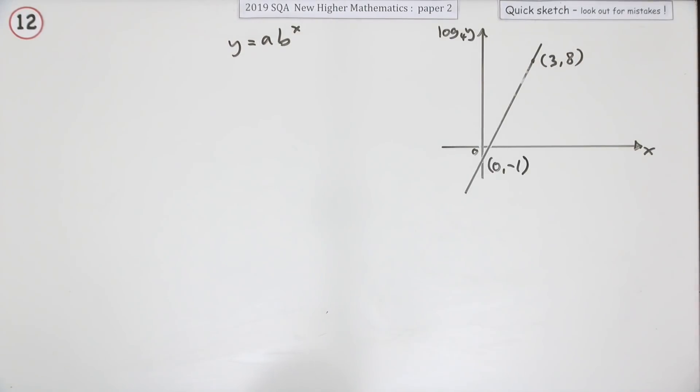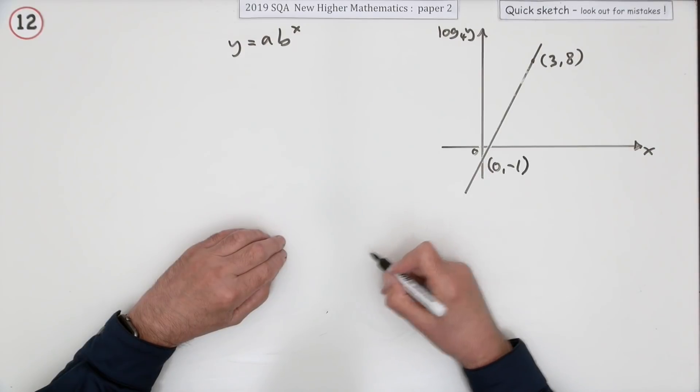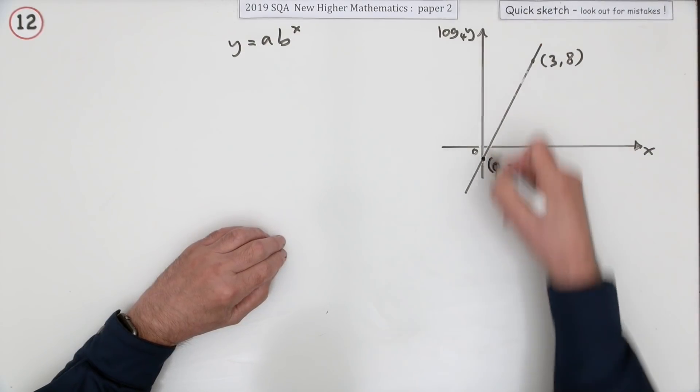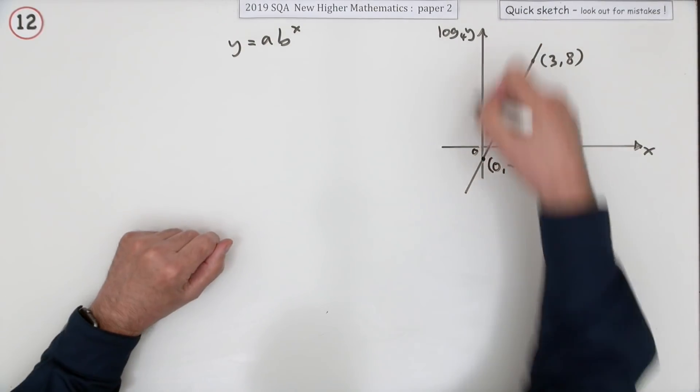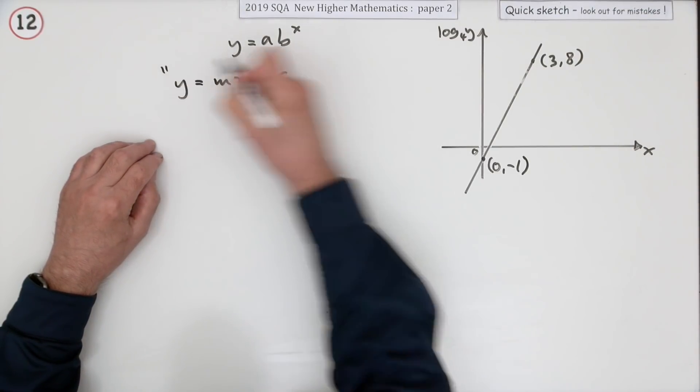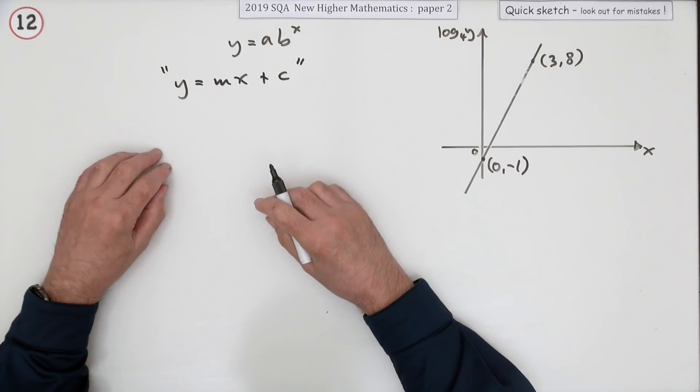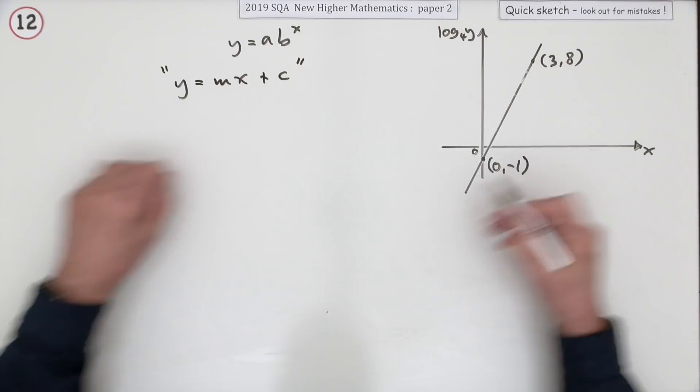Well, the obvious thing to do is write down the equation of that line. You know where it cuts the y-ish, the vertical axis. So its form is going to be y = mx + c. I'll put that in inverted commas because it's not strictly speaking y's that you've got there.